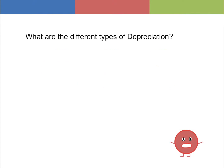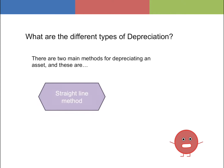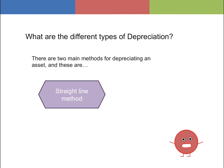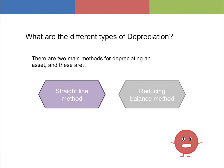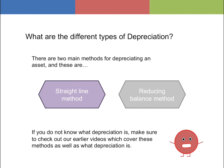There are two main methods for depreciating an asset: the straight line method and the reducing balance method. If you don't know what depreciation is or what these methods are, you can look at the previous videos which give a more in-depth description on these topics.